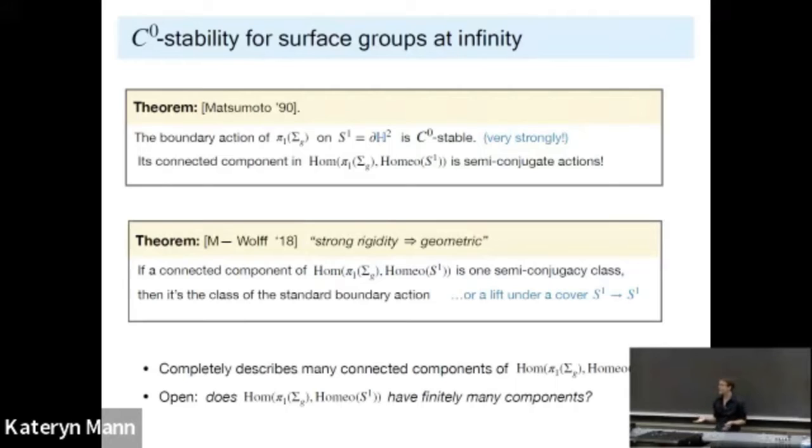So what does this do for us? Amazingly, it gives us a complete description of many connected components of the space of actions of a surface group on the circle. A space which has important interpretations in foliation theory and understanding foliations on three manifolds. But we're sort of far from done. For instance, it's a completely open question whether this space has finitely many connected components or infinitely many. We've identified a bunch of them. As g goes up, actually, the number of these ones we can talk about that are all stable actions grows exponentially. But I don't know.